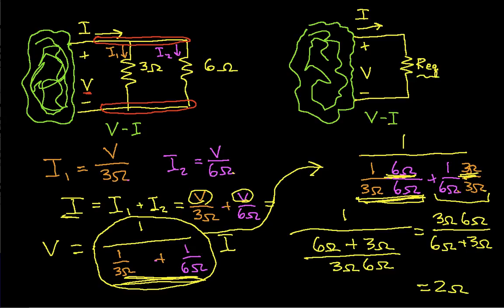And again, it's equivalent in the sense that the rest of the circuit would act exactly the same if I had a single 2 ohm resistor connected to it, as it would if I had a 3 ohm and a 6 ohm resistor in parallel connected to it.